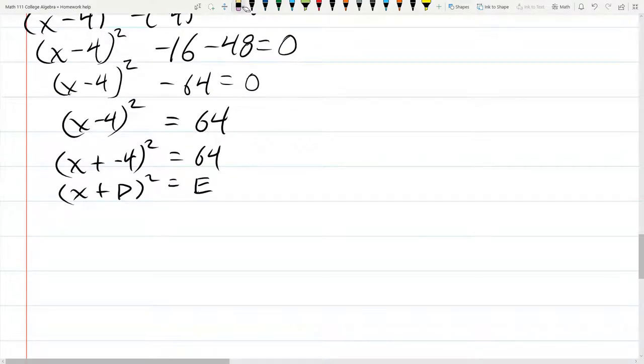We need some more room. So let's take this latest version before I put the D and the E in there. X minus 4 squared equals 64. And how do we solve for X?